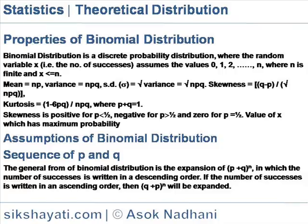Assumptions of binomial distribution. Each trial has two mutually exclusive possible outcomes — that is, success or failure. Each trial is independent of other trials. The probability of a success, say p, remains constant from trial to trial.